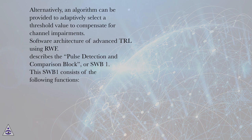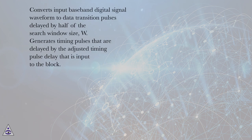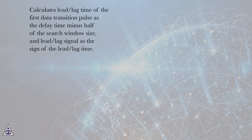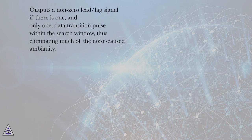Software Architecture of Advanced TRL using RWF describes the Pulse Detection and Comparison Block (SWB1). SWB1 consists of the following functions: converts input baseband digital signal waveform to data transition pulses delayed by half of the search window size W; generates timing pulses delayed by the adjusted timing pulse delay input to the block; counts number of data transition pulses within W from each successive timing pulse and keeps track of the delay of the first data transition pulse; calculates lead/lag time of the first data transition pulse as the delay time minus half of the search window size, and lead/lag signal as the sign of the lead/lag time; outputs a non-zero lead/lag signal if there is one and only one data transition pulse within the search window, thus eliminating much of the noise-caused ambiguity.